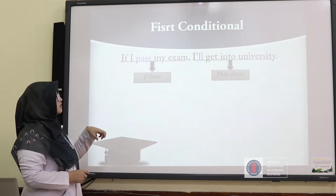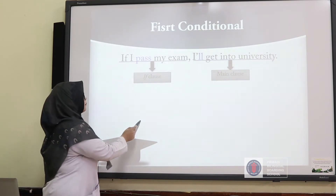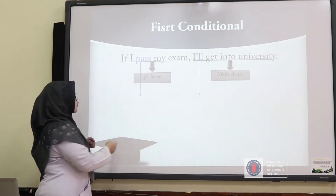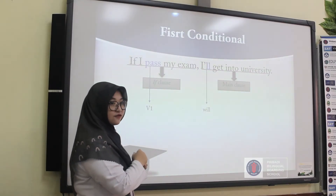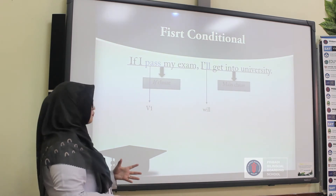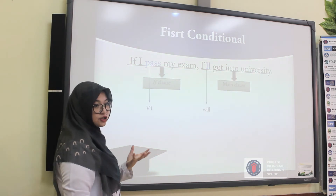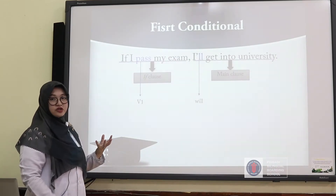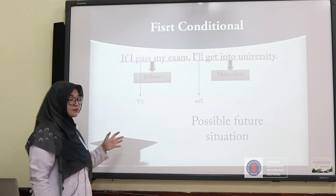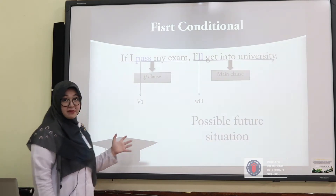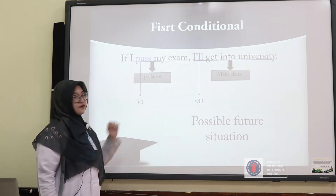Now I want you to look at the verbs used in the sentence: 'pass' and 'will.' 'Pass' is verb one (base form), and 'will' is the first form of the modal. When you use this sentence in conversation, it means you are talking about future possibilities — a possible future situation. You can make it happen: as long as you pass your exam, you can get into university.